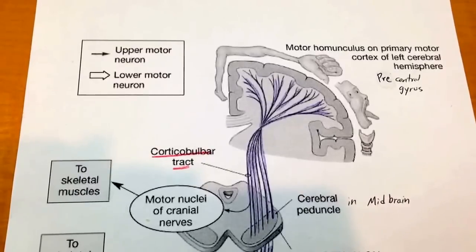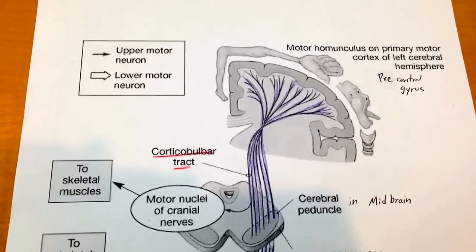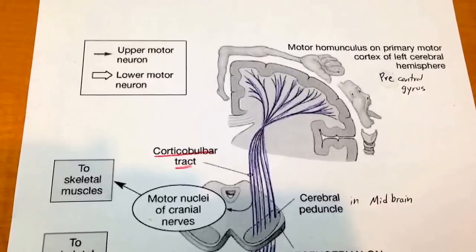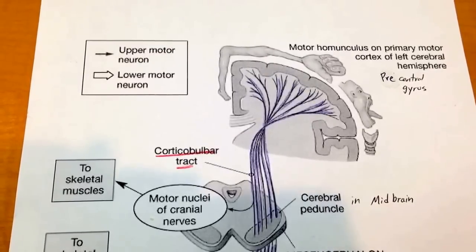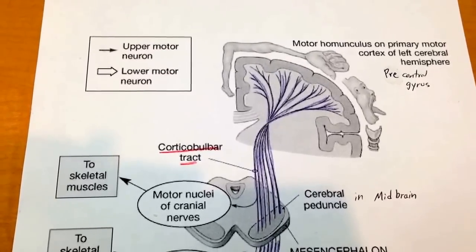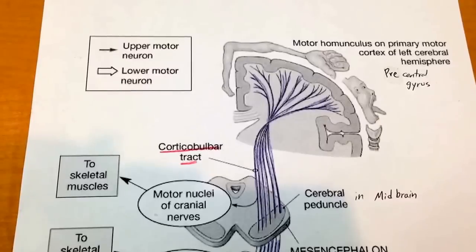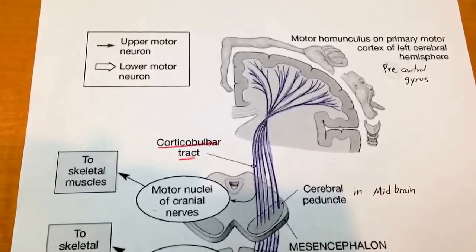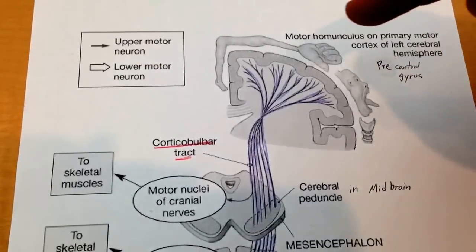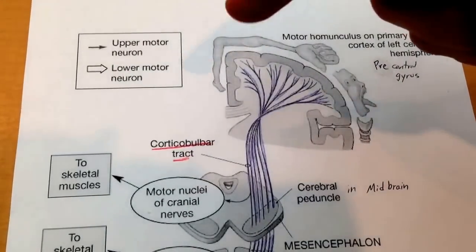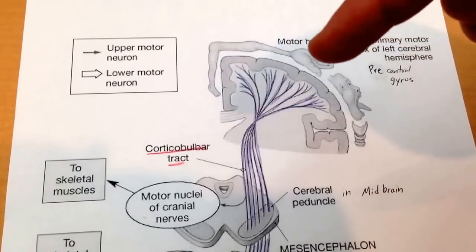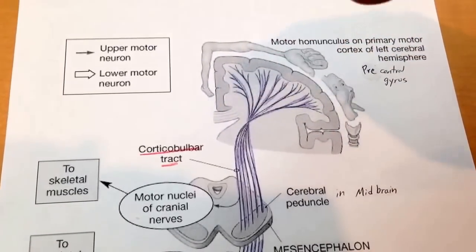Since it starts in the cortex, it can't be sensory, because it's sending information from the brain to the body, so the commands are motor commands. This is your motor tract, and it originates in the precentral gyrus, or the motor cortex. You can see the homunculus — nerves that start here will control the feet, and nerves that start here will control the hands.